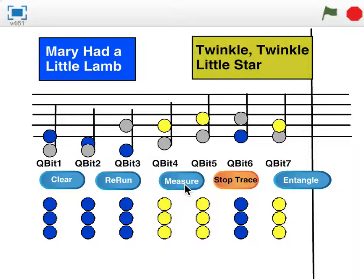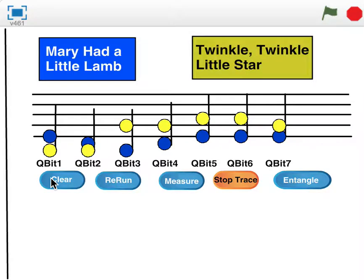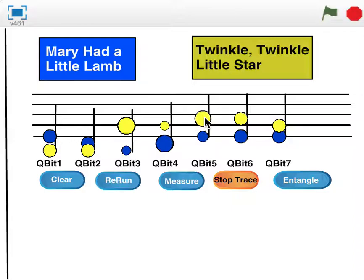This is depicted here by the size of the note. If I click on a yellow note, it gets bigger and the corresponding blue one gets smaller. As that yellow one gets larger, it indicates a growing probability of reading out yellow and a shrinking probability of reading out blue.